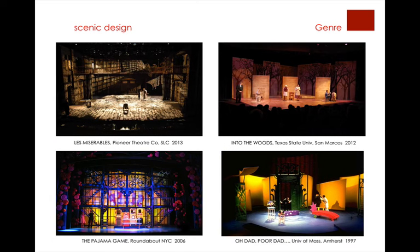It's important that as we look at some of the designs, we get a feeling for how each genre is presented. We'll look at Les Misérables at the Pioneer Theater, the Pajama Game at the Roundabout in New York City in 2006, Into the Woods at Texas State University in 2012, and Oh Dad, Poor Dad at the University of Massachusetts Amherst in 1997. Looking at the extremes first — for tragedy we'd look for more sullen colors, more detail and weight, so we'd go to Les Misérables. For farce at the opposite extreme, we'd expect more color, more lightness, perhaps less detail, because the detail isn't important when there's not a lot of message.